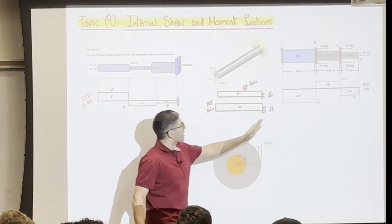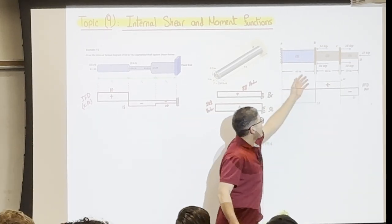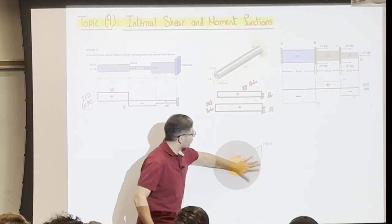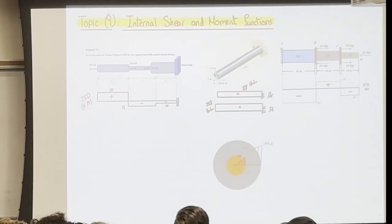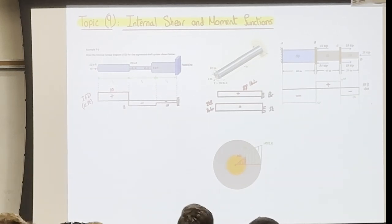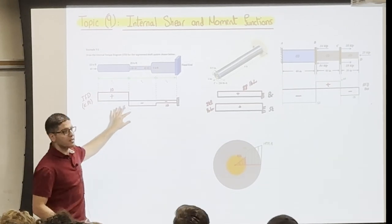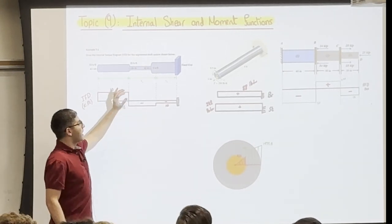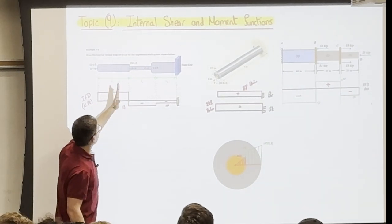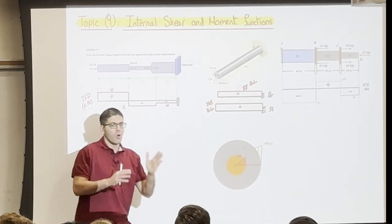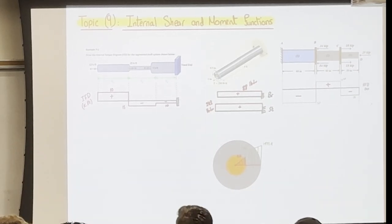We design by taking a cross section — for example at some point — and that's when we calculate the stresses. That's when the material and the geometry come into play. When we're drawing the internal force diagram, we only care about the forces. Once we find where we want to design, we take a cross section. The normal stress is force over area — that's when the geometry comes into play.